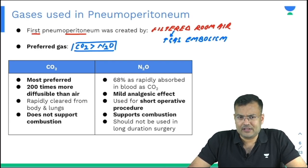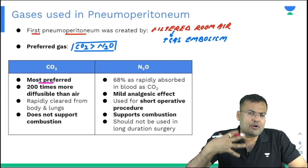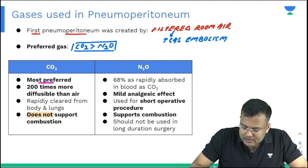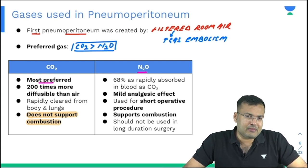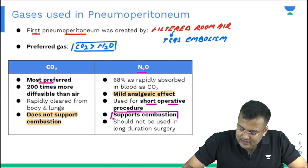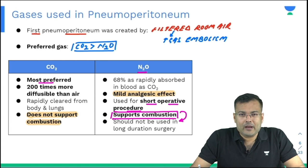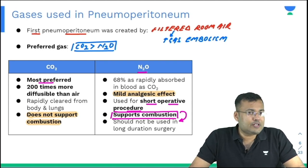Carbon dioxide is most preferred because it is 200 times more diffusible than air, meaning it is rapidly cleared from the body and lungs. CO2 can be used for long-duration surgery because it does not support combustion. Nitrous oxide is 68% as rapidly absorbed in blood as CO2 and has a mild analgesic effect, so it can be used for short operative procedures. However, since nitrous oxide supports combustion, it should not be used for long-duration surgery where cautery is needed. Overall, the most preferred gas is carbon dioxide.